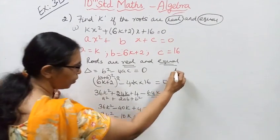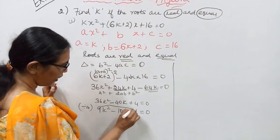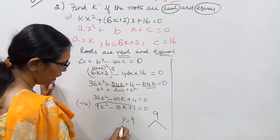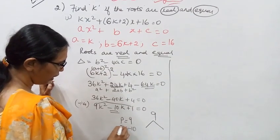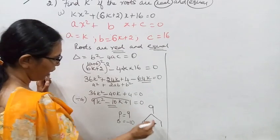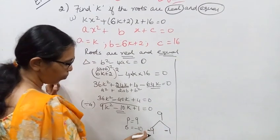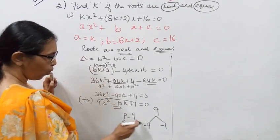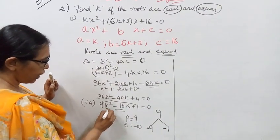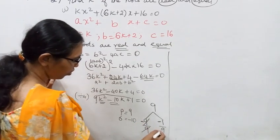Now let's factor this. We need two numbers whose product is 9 times 1 equals 9, and whose sum is -10. Those numbers are -9 and -1. So 9k² - 9k - k + 1 = 0.